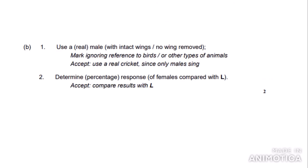The mark scheme says: first marking point — use a real male with intact wings or no wing removed (ignoring references to birds or other animals as the question refers to crickets). Second marking point — determine the percentage response of females compared with L. It also says you can compare results to L, but the examiner prefers you refer to the females specifically. So you get two marks for this question.